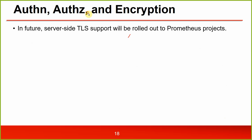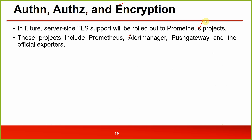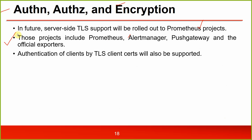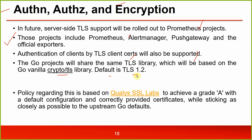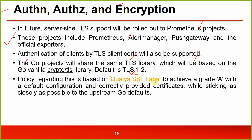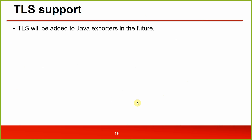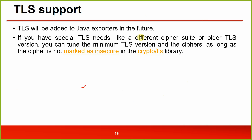Authorization, authentication, and encryption: in the future, server-side TLS support will be rolled out to Prometheus projects including Prometheus, Alertmanager, Pushgateway, and the official exporters. Authentication of clients by TLS client certificates will also be supported. The Go projects will share the same TLS library based on Go's vanilla crypto/tls library; the default is TLS 1.2. Policy is based on Qualis SSL Labs to achieve a grade A with a default configuration and correctly provided certificates while sticking as closely as possible to upstream Go defaults.